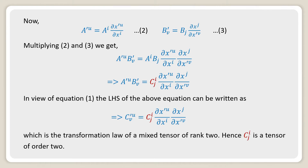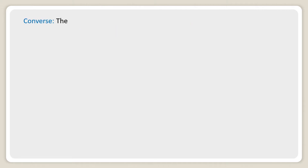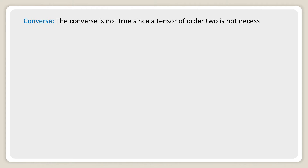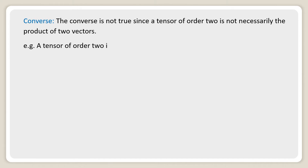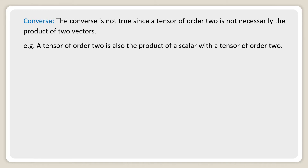Hence, C_ij is a tensor of order 2. Converse: The converse is not true, since a tensor of order 2 is not necessarily the product of two vectors. For example, a tensor of order 2 is also the product of a scalar with a tensor of order 2.